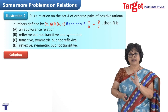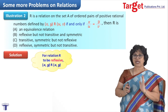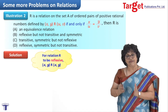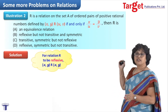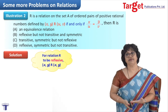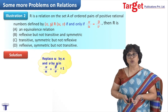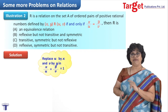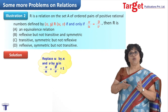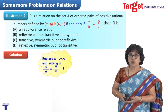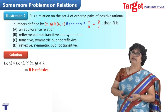We try one by one. First, is it reflexive? We need to show that pair (x, y) is related to itself — so we replace u by x and v by y. We get x/x = y/y, which is 1 = 1. So the relation is reflexive.